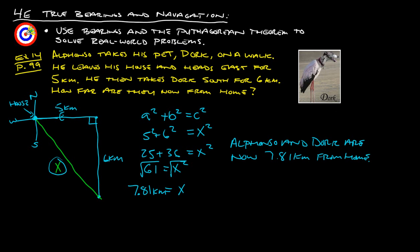Alfonso and Dork are now 7.81 kilometers from home. Alfonso's out of luck, but it looks like Dork could probably just fly back home. That is how you do example 14 and problems like it. Let's take a look at another example.